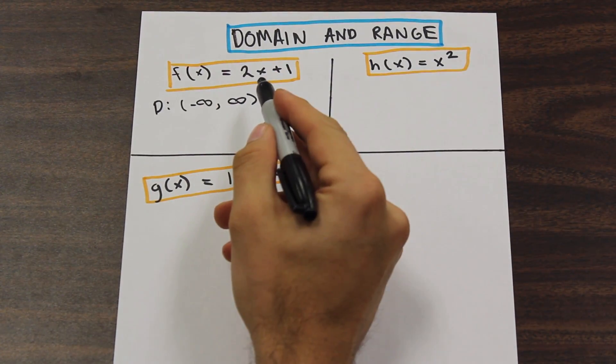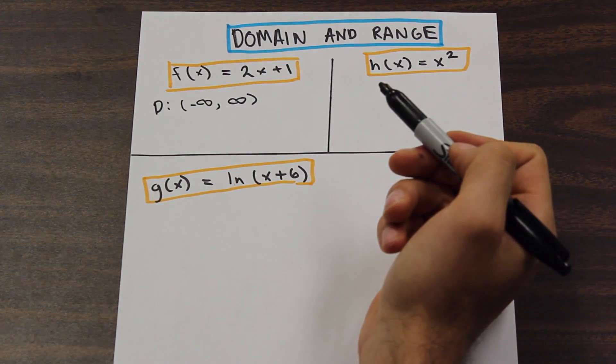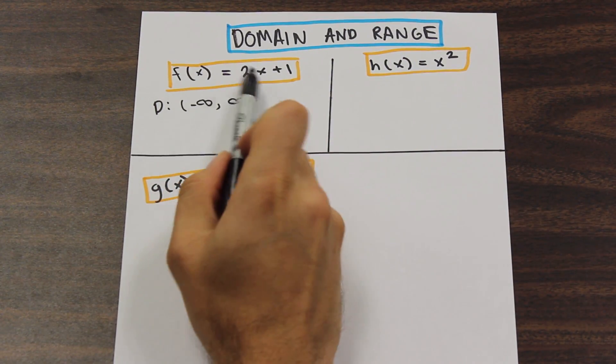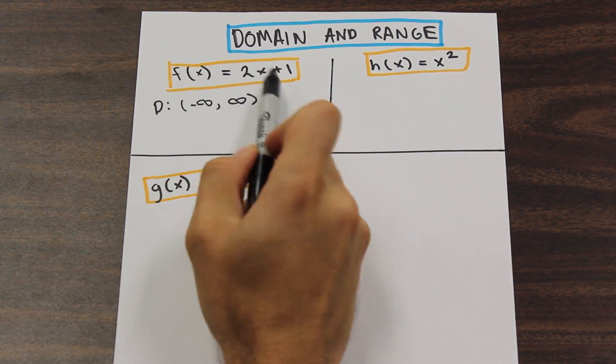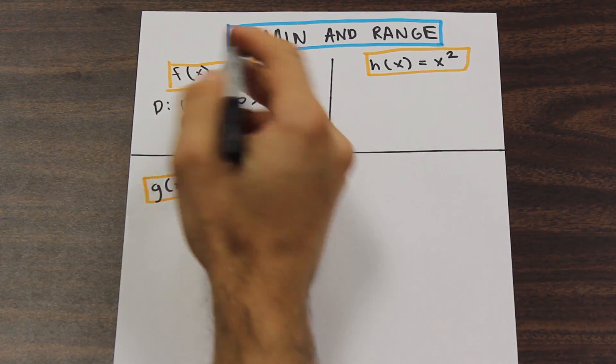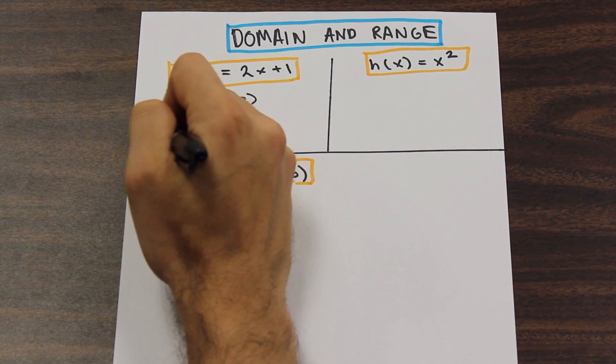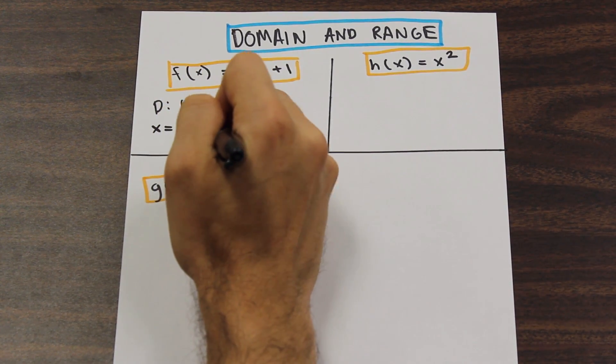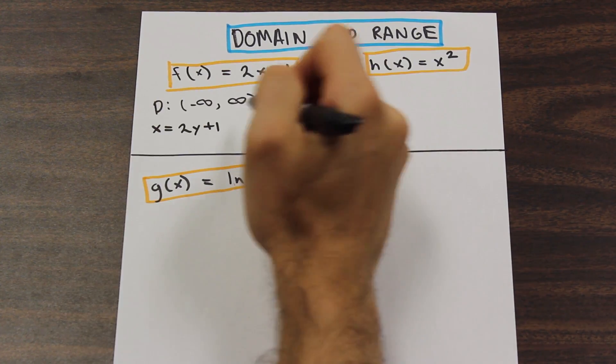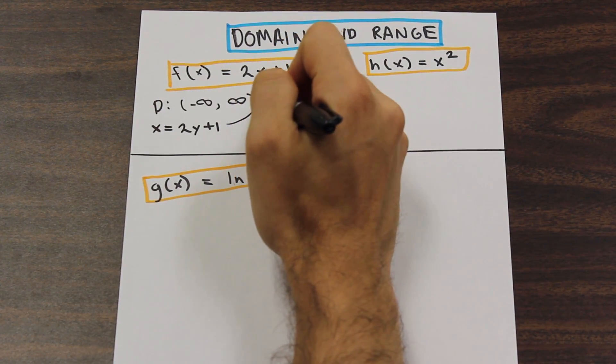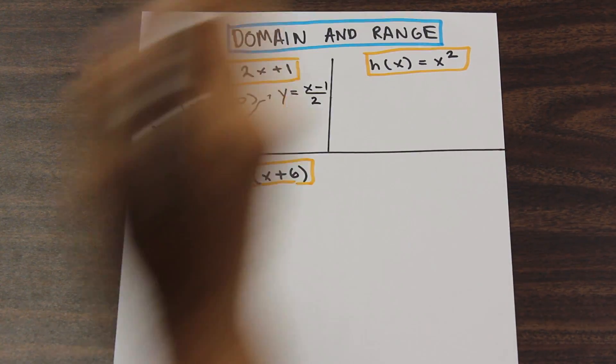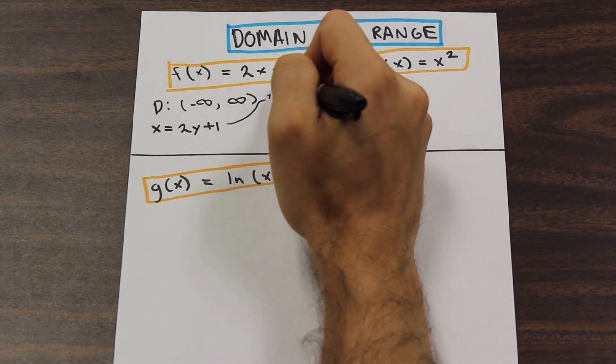Now for the range, like I said before, we're going to use the inverse of the function. What does that mean? All it means is that we're going to flip the Y and X values and we're going to solve for Y. So if we rewrite it, this is Y equals 2X plus 1, so let's write it as X equals 2Y plus 1. Then solving for Y, we should get, over here I'm going to draw a little arrow, we should have Y equals X minus 1 over 2. So this is the inverse of the function.